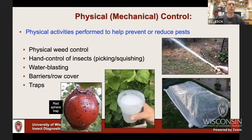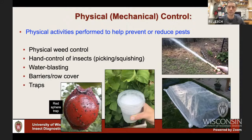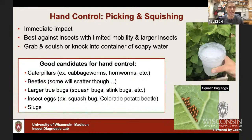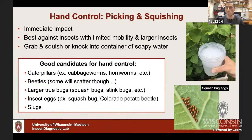Physical or mechanical control means physically doing something to dislodge insects or prevent them from reaching plants. This includes physical weed control, hand control like squishing or knocking insects into soapy water, traps in certain cases, and mesh screening row covers as a physical barrier between pests and plants. Hand control is something I'm a big proponent of — you get immediate results. It works best for larger, slower-moving insects. You can also squish eggs of Colorado potato beetle and squash bugs — a great chemical-free approach.